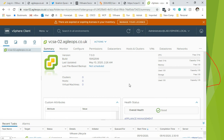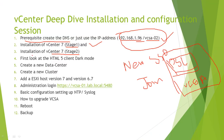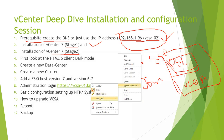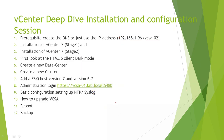There you go — this is the brand new vCenter 7 successfully installed in our environment. It doesn't have anything configured yet. Log in with administrator@lab.vsphere.local and the password you set during stage two. Wait for it to load and there you go — the vCenter 7 interface is ready. Now let's create our first datacenter.